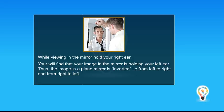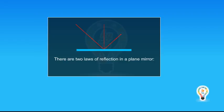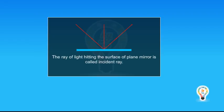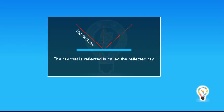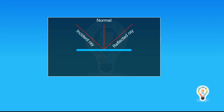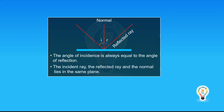That is, from left to right and from right to left. This is known as lateral inversion of image. There are two laws of reflection in a plane mirror. The ray of light hitting the surface of a plane mirror is called the incident ray. The ray that is reflected is called the reflected ray. The angle of incidence is always equal to the angle of reflection. The incident ray, the reflected ray and the normal lie in the same plane.